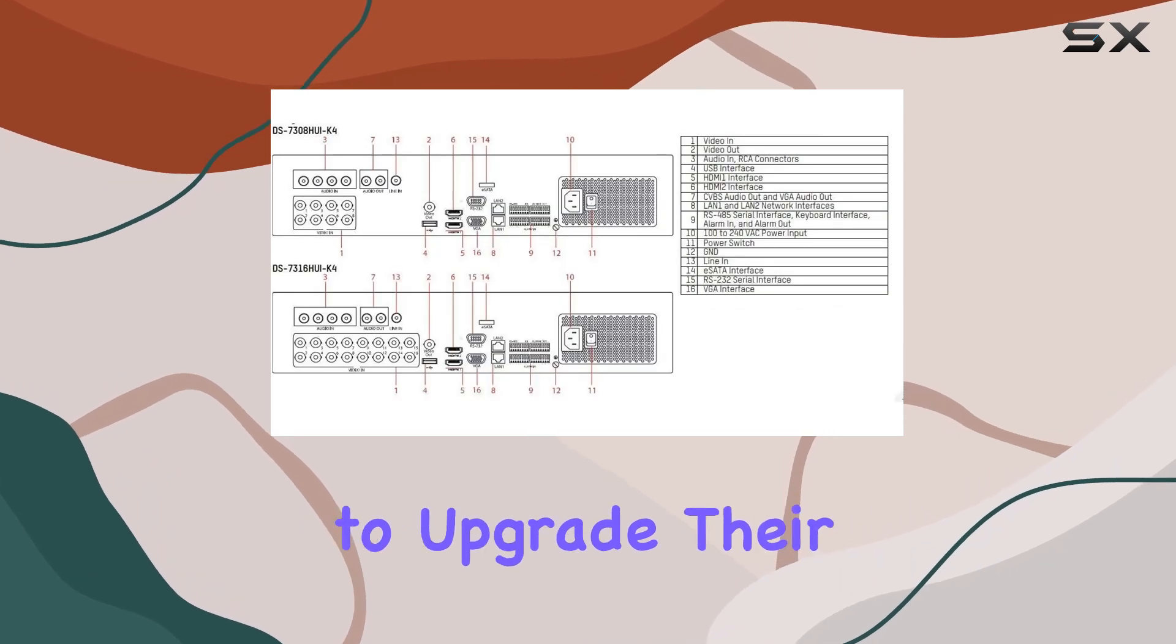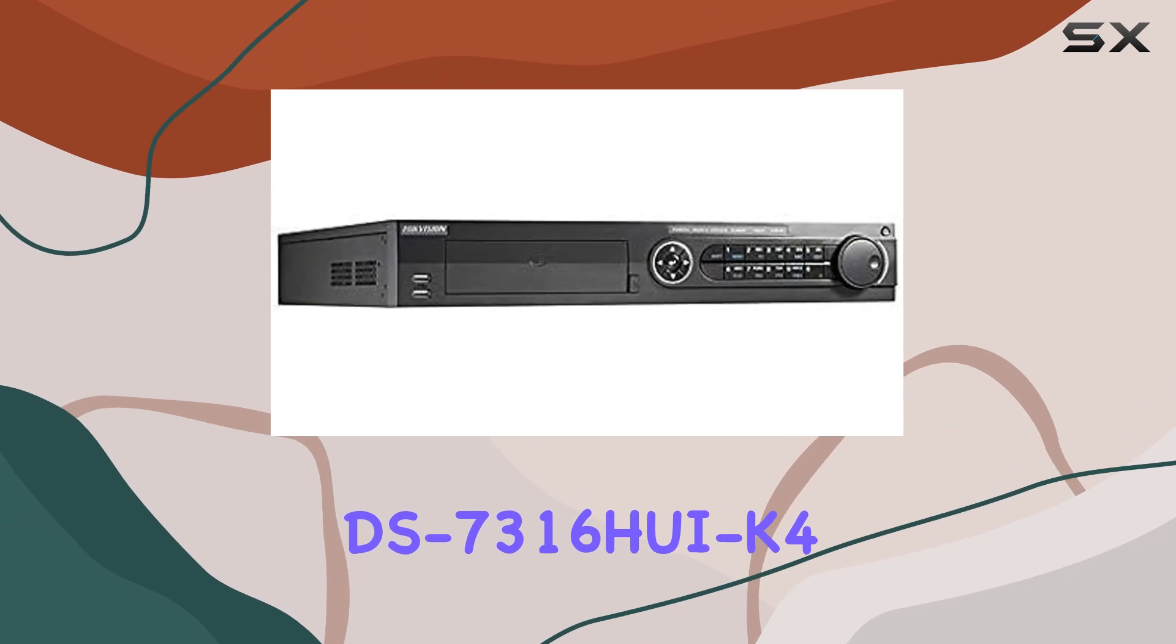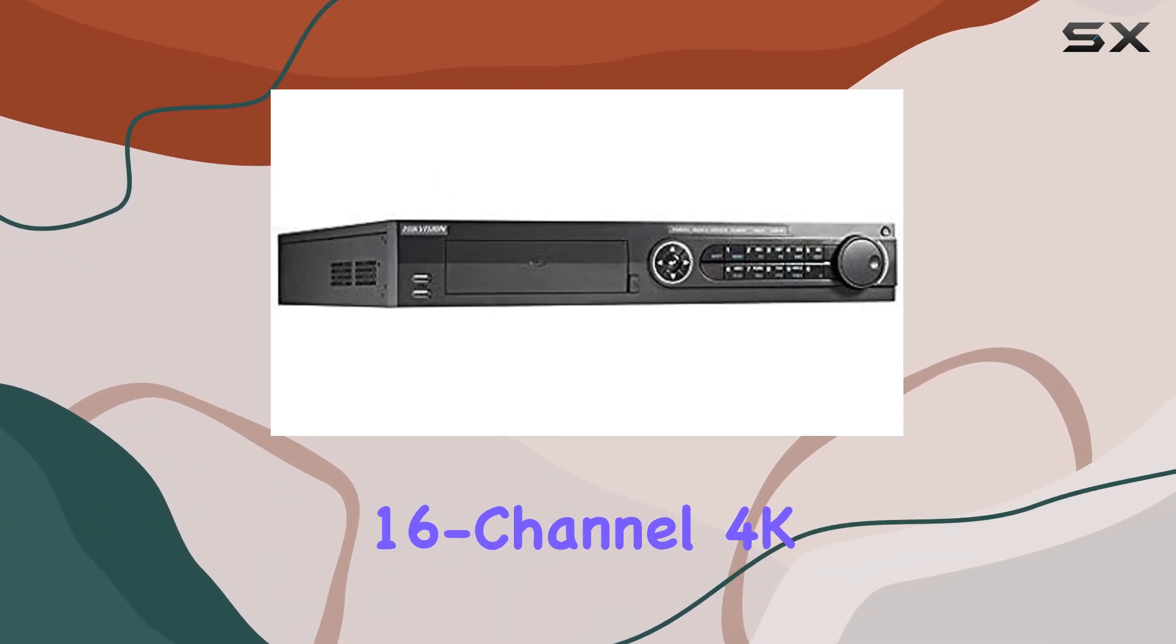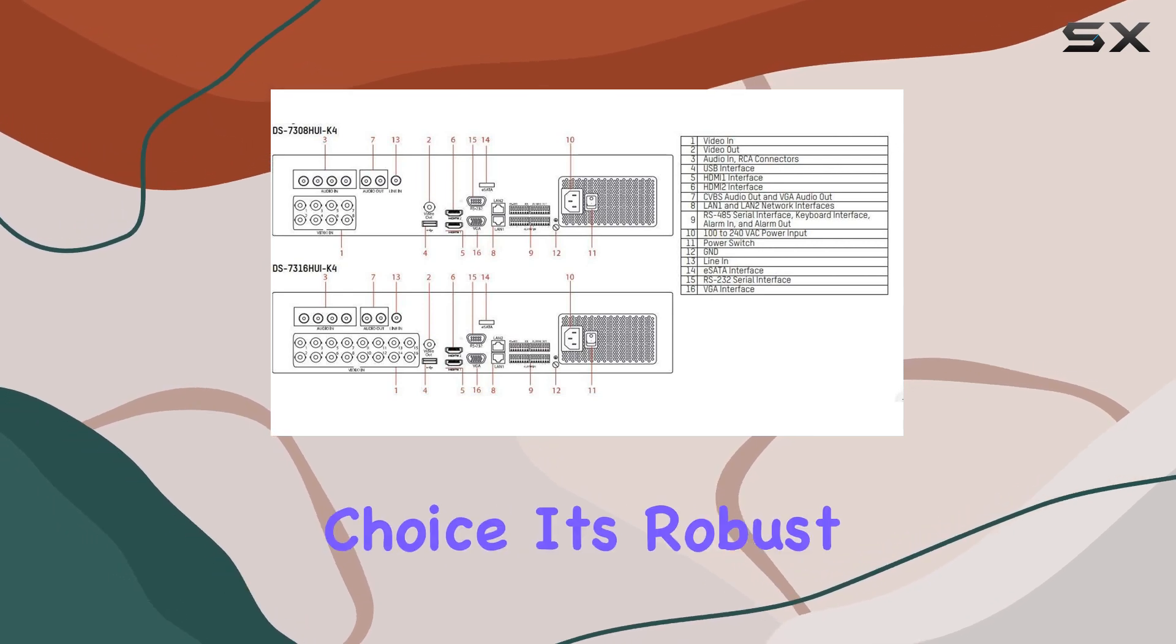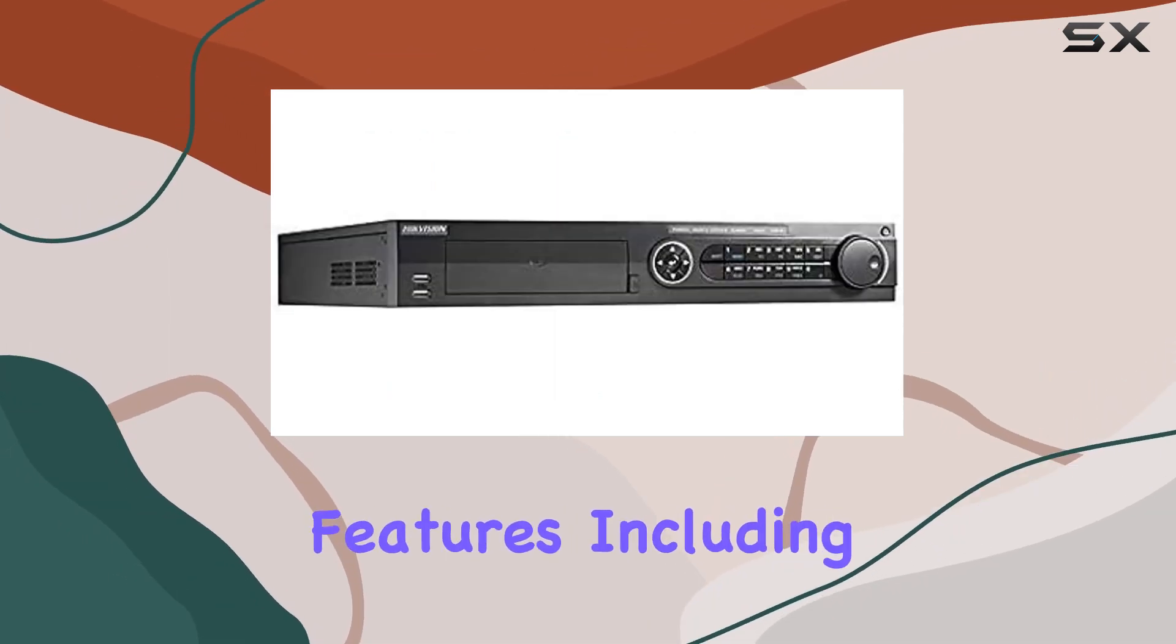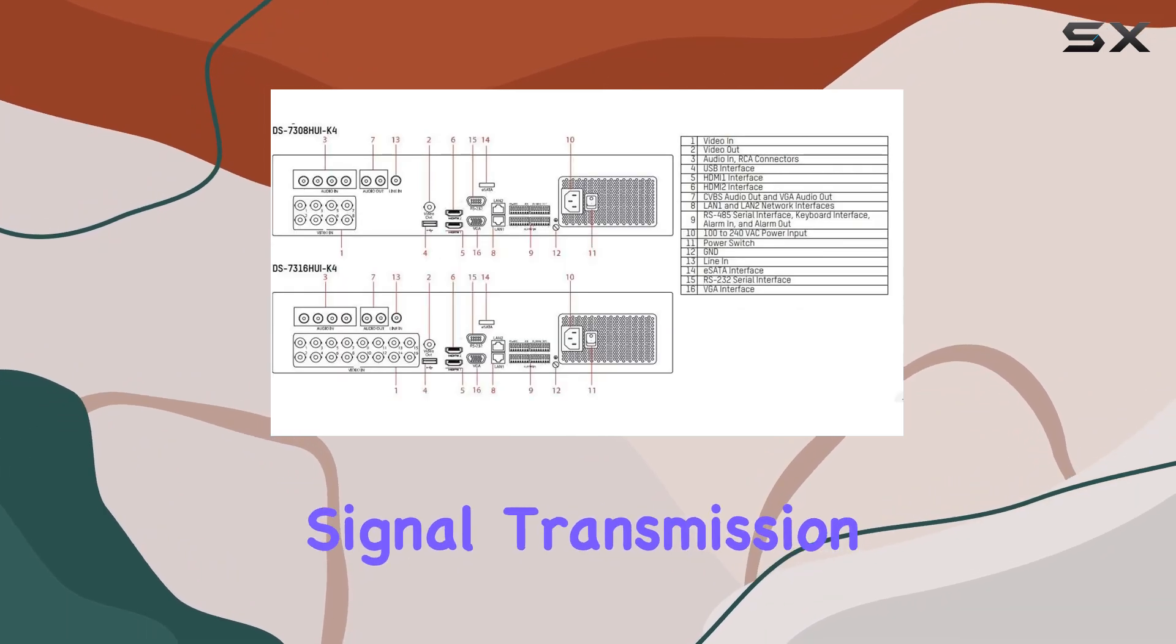For anyone looking to upgrade their surveillance system, the Hikvision DS7316HUI K4 16-channel 4K DVR stands out as a reliable choice. Its robust features, including high-definition output, efficient encoding, and long-distance signal transmission capabilities, make it a top contender in its class.